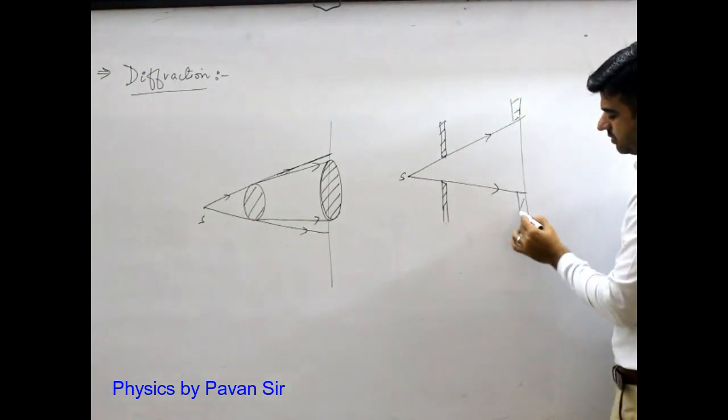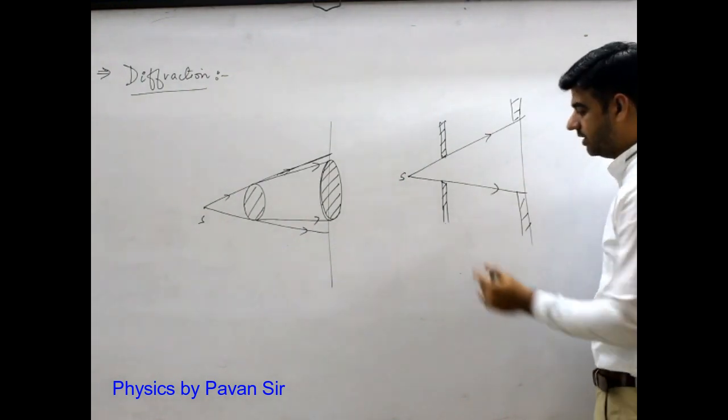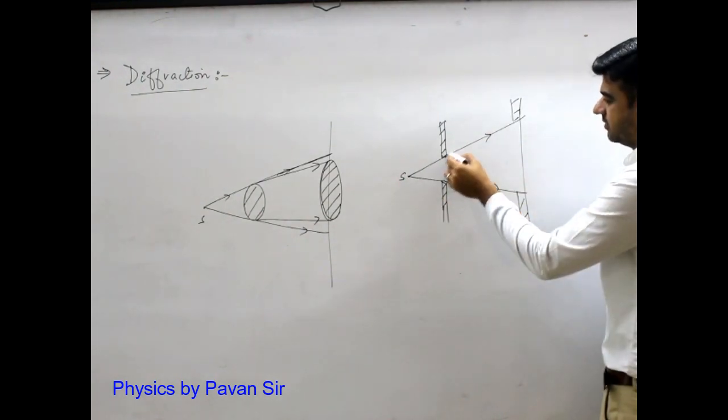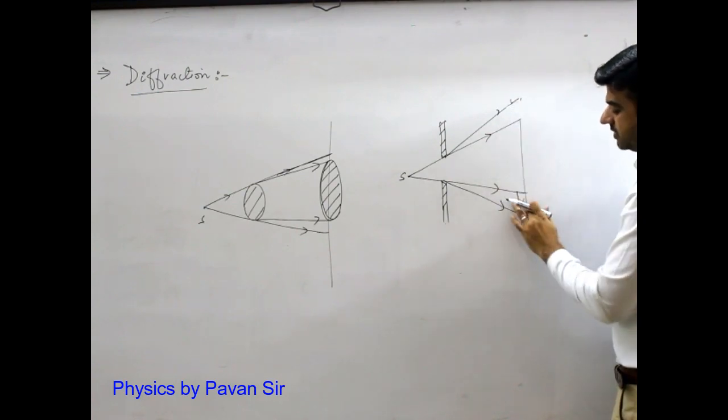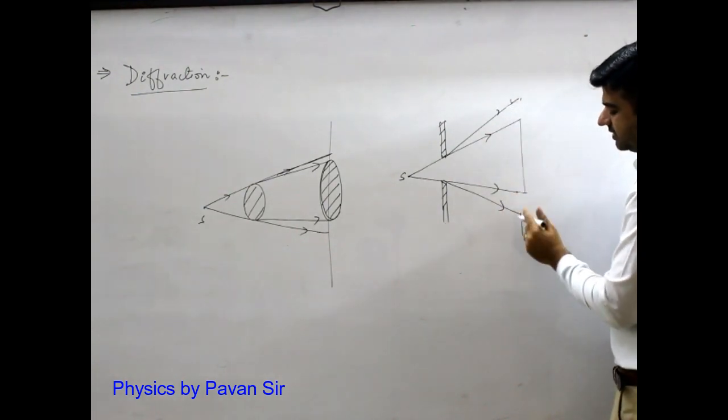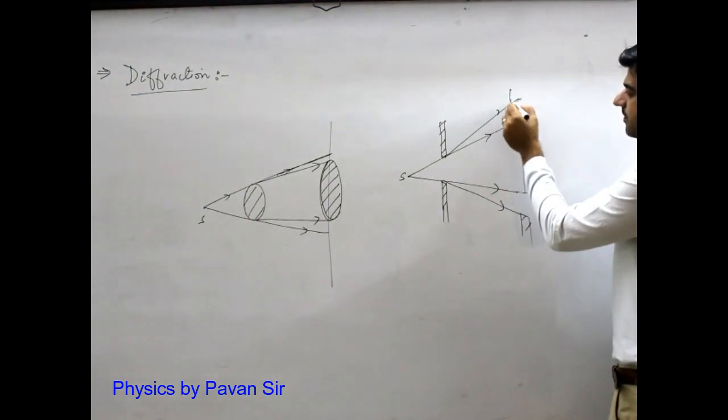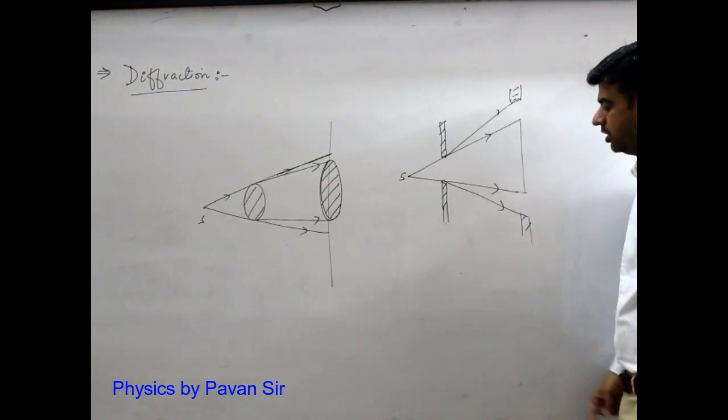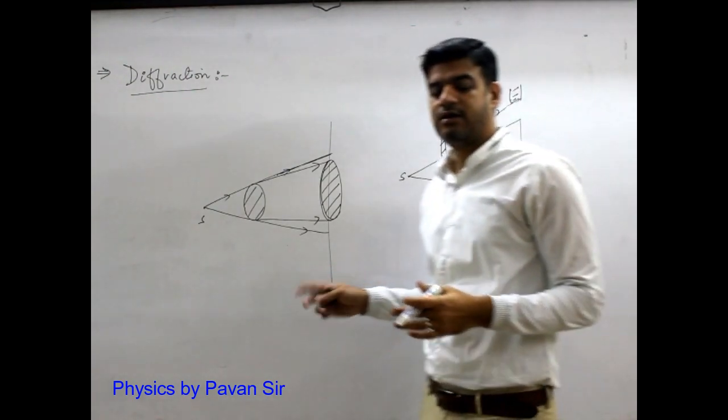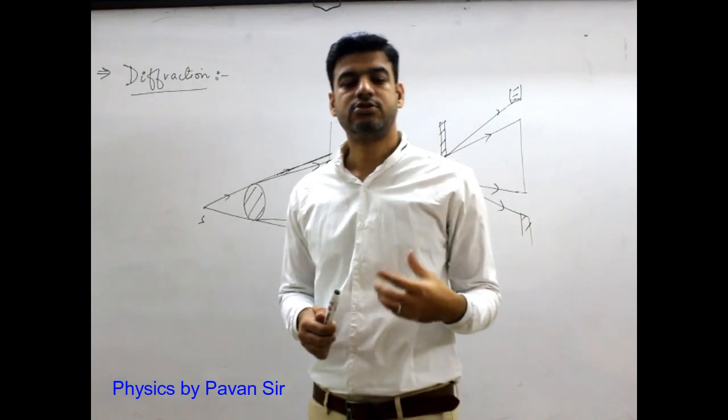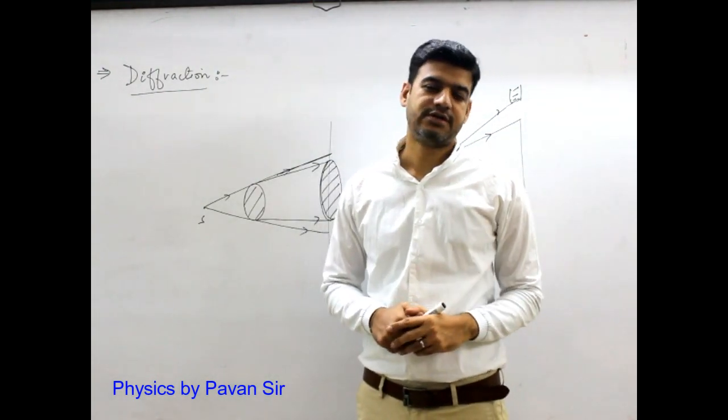Light will pass through the slit and spread out. So light doesn't travel straight, but bends and spreads. So this light phenomenon we call diffraction.